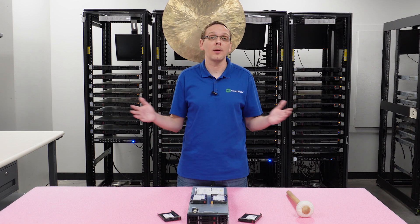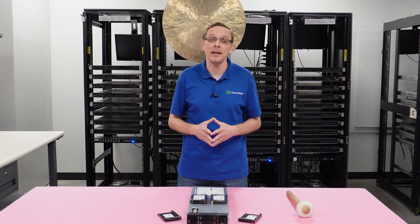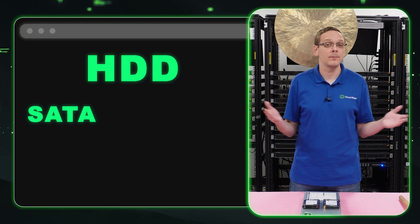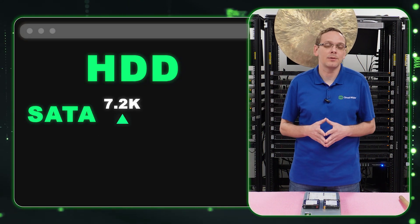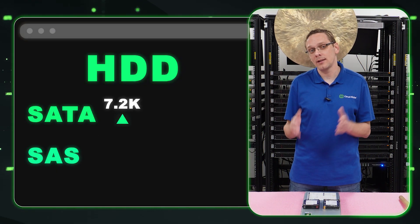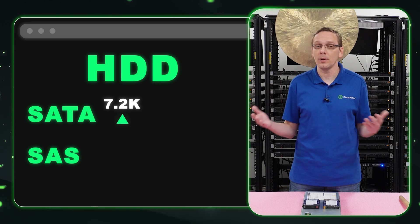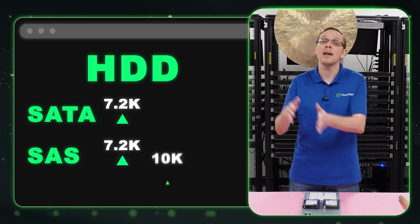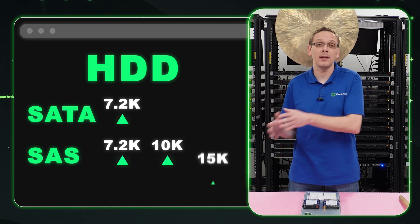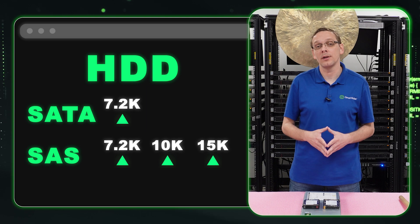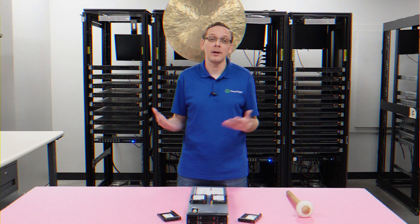Now that we know about the sizes, let's talk about the speeds. For a SATA hard drive you're going to get 7.2k RPM — that's what you get. For a SAS hard drive it's going to be a little bit faster: you're going to get a 7.2k option but you're also going to get a 10k and a 15k option, which makes it a little bit better because it's a faster speed overall.